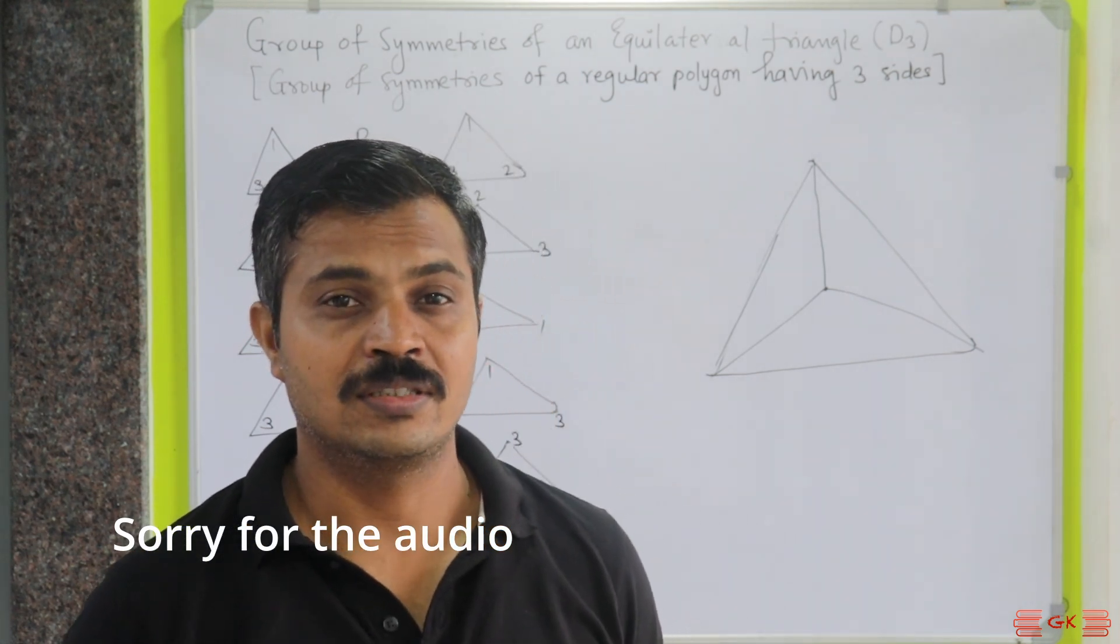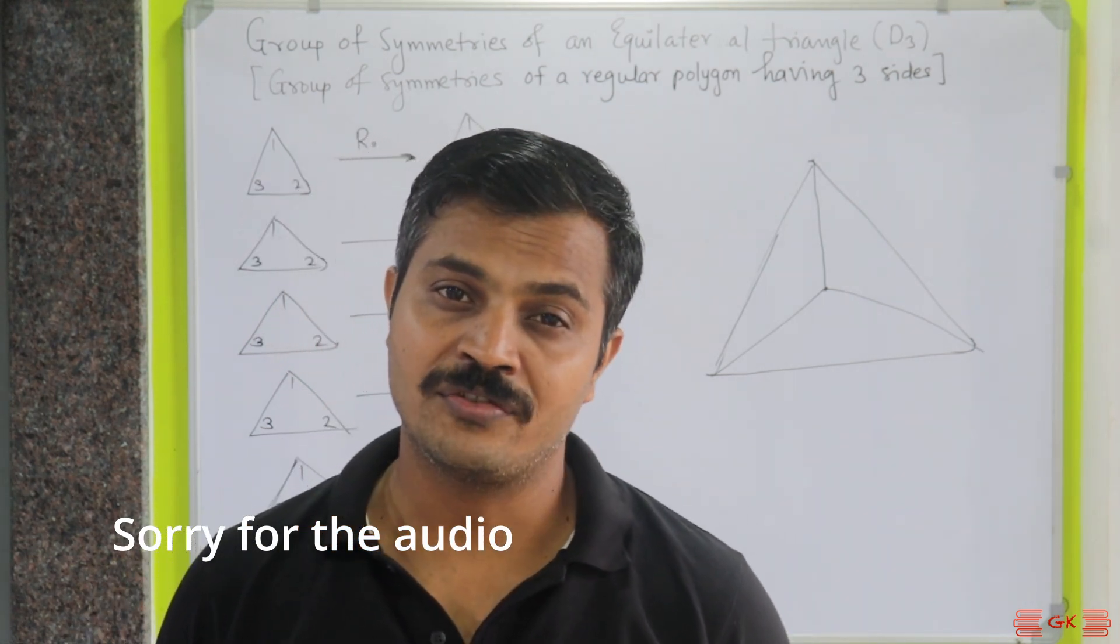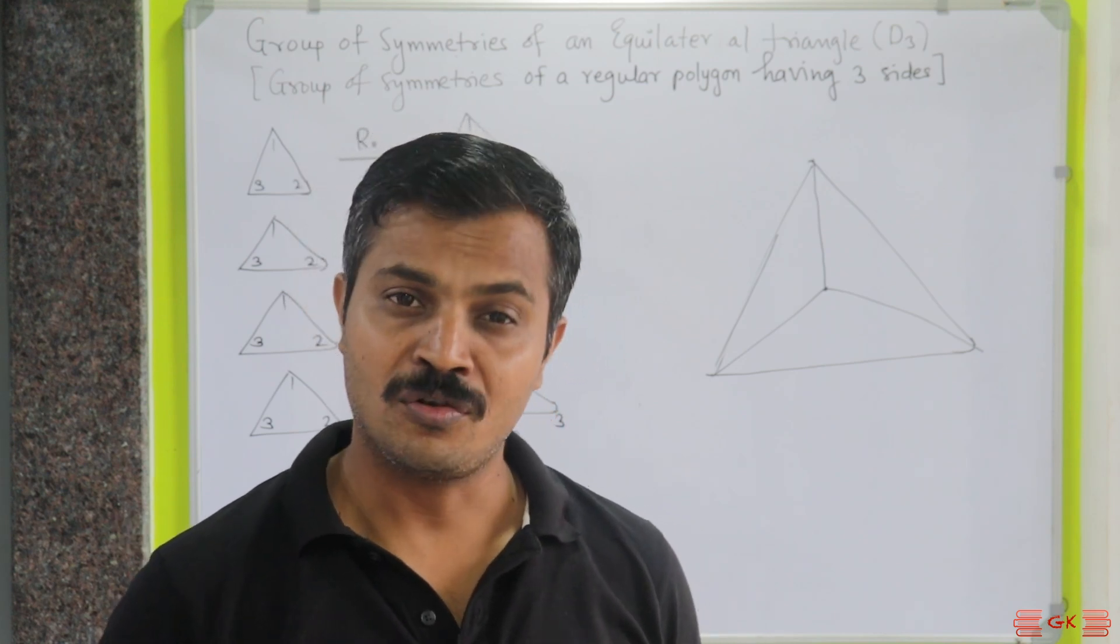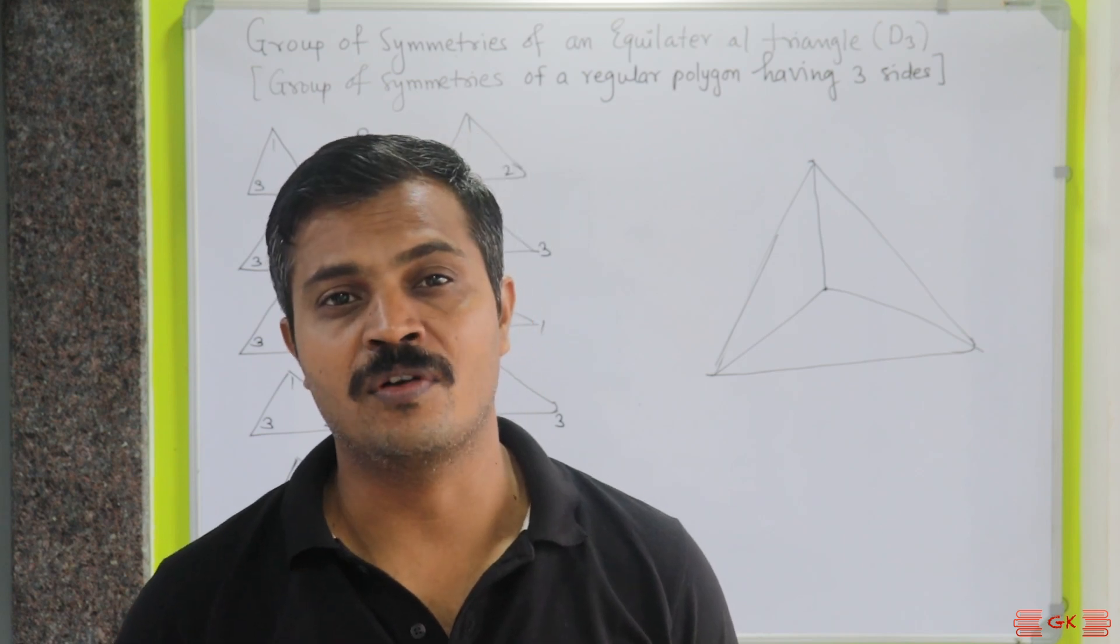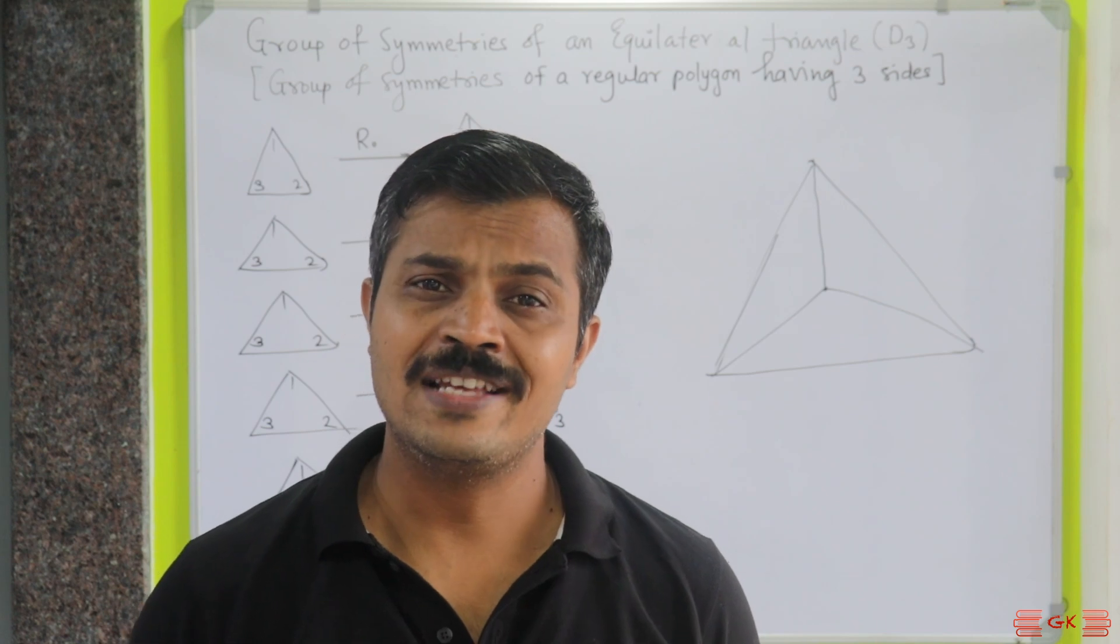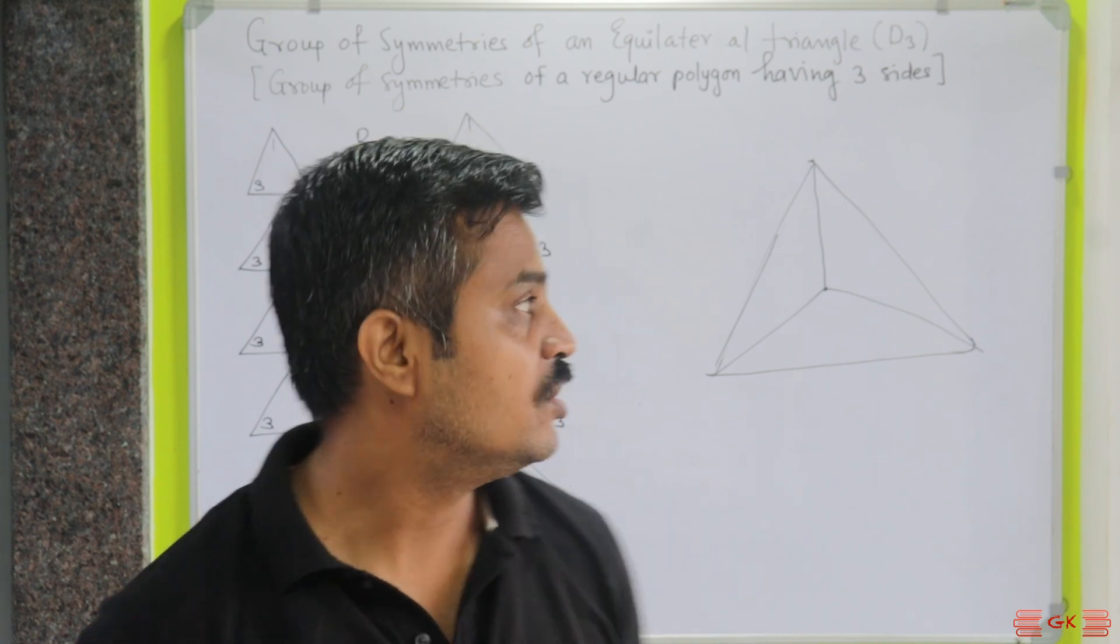We are going to talk about the group of symmetries of an equilateral triangle, that is D3, also called the group of symmetries of a regular polygon having three sides. This is also called the dihedral group D3.